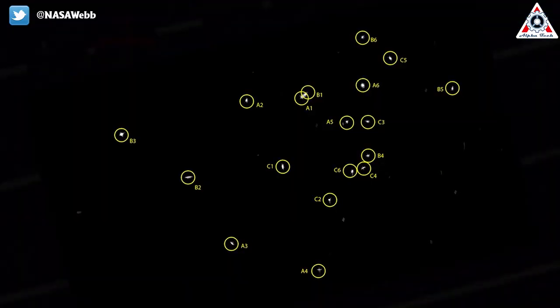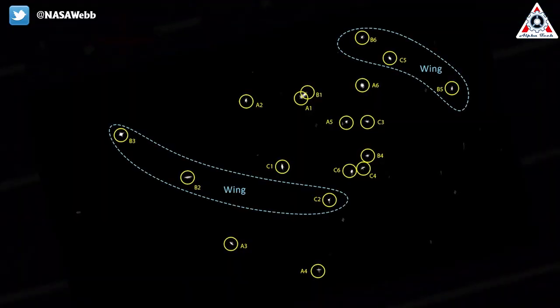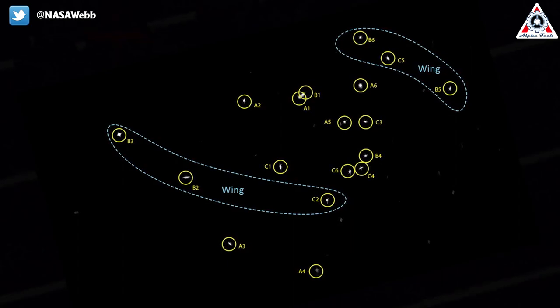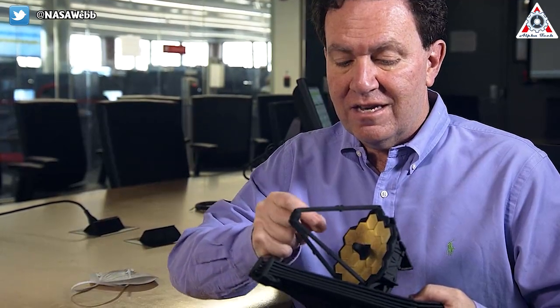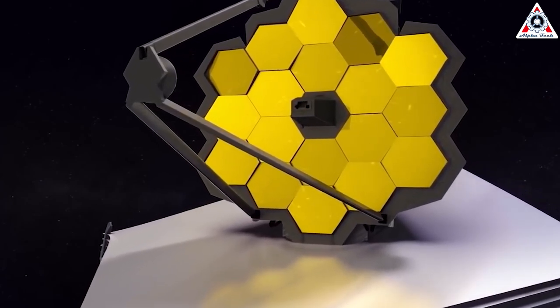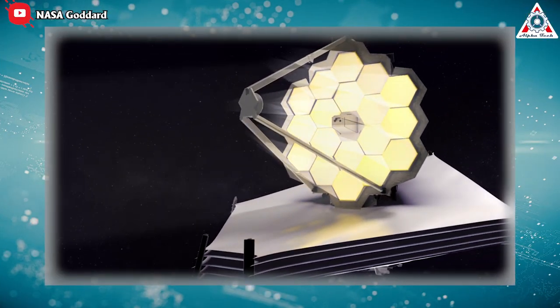So when Webb looks at HD 84406 initially, it will produce 18 slightly different fuzzy pictures of the star. The engineers need to match each picture to the right segment. Once they know what segment is producing what image, they can then move the segments to look at a single point with greater accuracy.